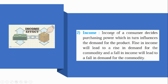Income of a consumer decides purchasing power, which in turn influences the demand for the product. A rise in income will lead to a rise in demand. As income increases, demand also increases — this shows a direct relationship. Because your purchasing power increases, you spend more, you buy better things, so your demand and purchasing power both rise. First factor was price, which has an inverse relationship with demand, and second is income, which has a direct relationship with demand.